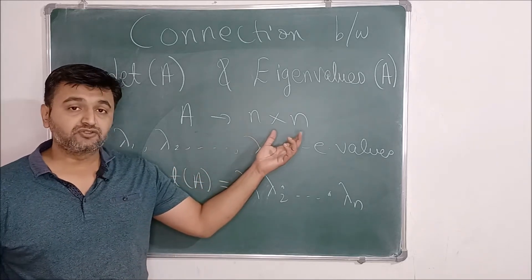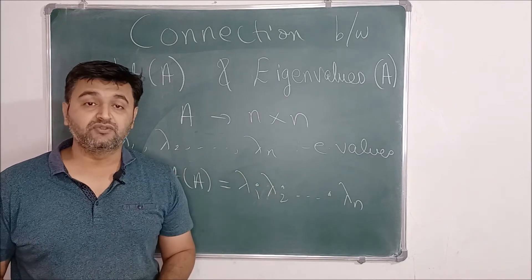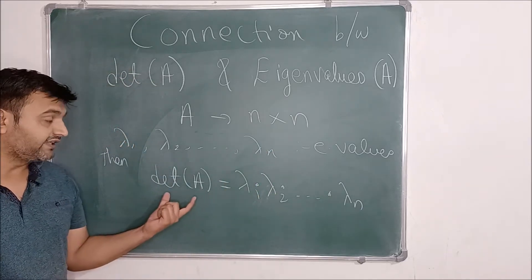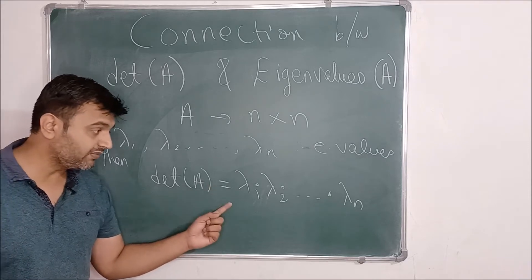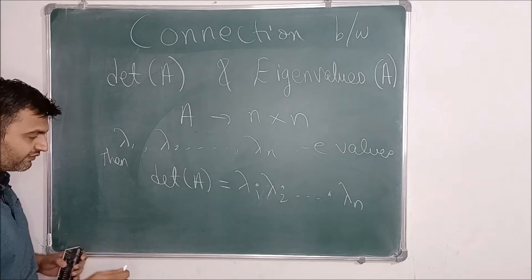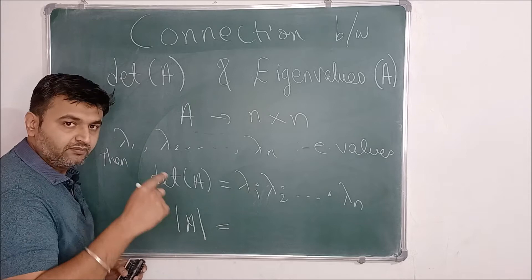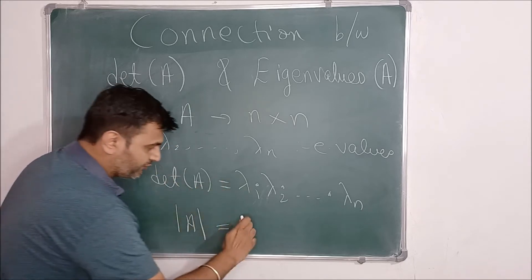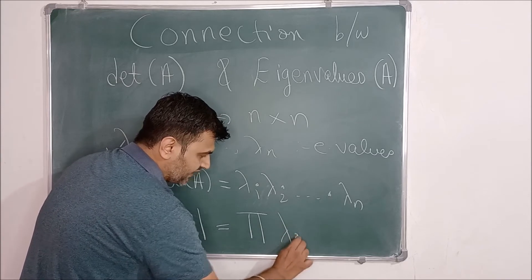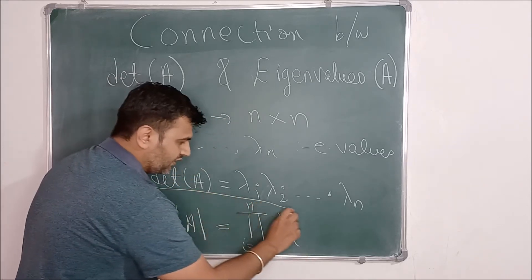So if you have a square matrix of order n and if lambda 1 to lambda n are the eigenvalues for the given matrix A, then the result is that the determinant of a matrix is nothing but the product of the n eigenvalues. The compact way of writing this is: determinant of A equals — using the product notation pi — the product of lambda i's, where i is running from 1 to n. So this is what the result is.